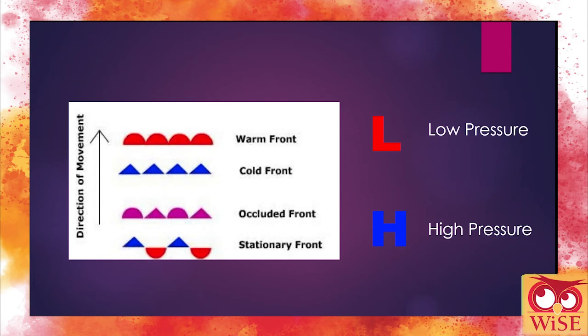If you've ever been watching the local weather, you may have seen all these different symbols for fronts and pressure systems. With the warm front, you have the red semicircles. For the cold front, you have the blue triangles. Occluded fronts are the purple alternating semicircles and triangles, which basically means a cold front and a warm front have met up. A stationary front has triangles on one side and semicircles on the other, meaning they're running parallel and not really moving. You also see low and high pressure systems, which indicate areas of low and high atmospheric pressure that can drive weather systems.